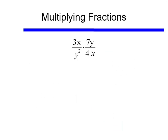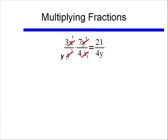To multiply fractions, all I do is multiply my numerators and multiply my denominators. Before I do that, I usually look for things I can pre-simplify. I see an x in the numerator and an x in the denominator, and I'll divide those out, leaving behind a 1. I also see a y I can cancel in the numerator, and dividing y out of y squared leaves behind a y. Then multiplying across, I get 3 times 7, or 21, divided by 4y.